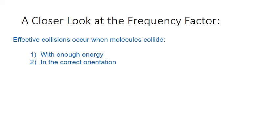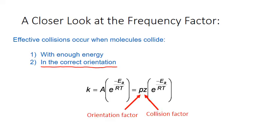Let's take a closer look at the frequency factor in the Arrhenius equation. This represents the number of collisions that occur with the correct orientation to the activation barrier per unit of time. The frequency factor can be broken down further into both a collision factor and an orientation factor. The collision factor is a measure of the number of collisions that occur per unit time, and the orientation factor indicates the number of those collisions that occur with the correct orientation.